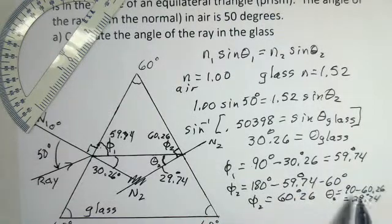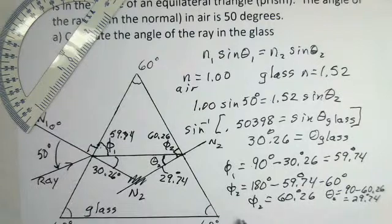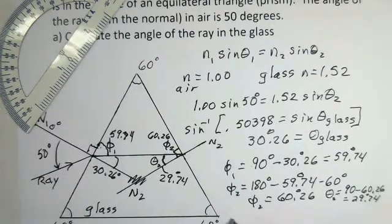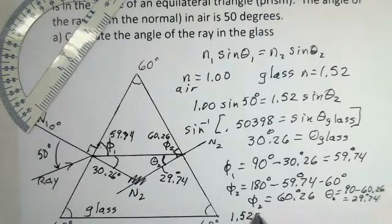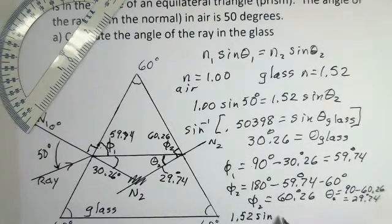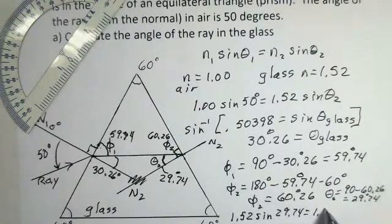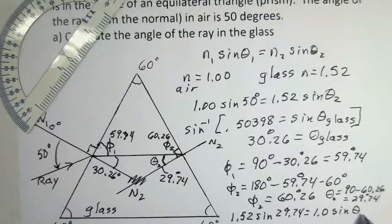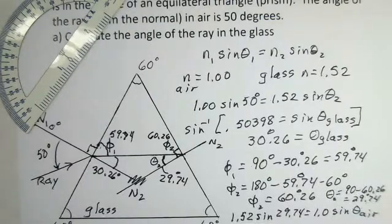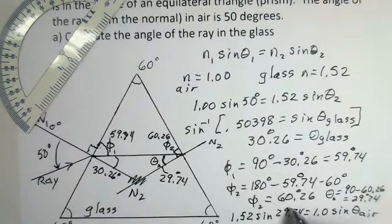The 90 minus 60.26 leaves us 29.74 and now we use Snell's law again I'm inside the glass to start with so index of refraction 1.52 sine of the angle of the ray away from the normal inside the glass 29.74. Index of refraction of air is 1 and I need the angle out in air so you're going to take your calculator 1.52 times the sine of 29.74 degrees divide by 1 take inverse sine of both sides.